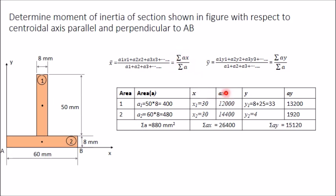Multiply to get Ax: 400 × 30 for area one, and 480 × 30 for area two. For y₁, the centroid of area one is at the center of that rectangle. The total height is 50, so it is 25 mm from each side. The distance from the x-axis is 8 + 25 = 33 mm.